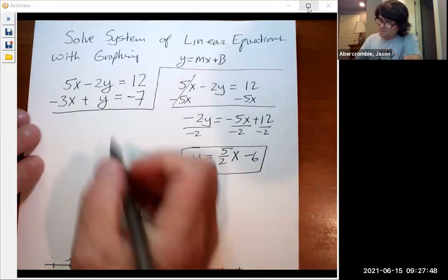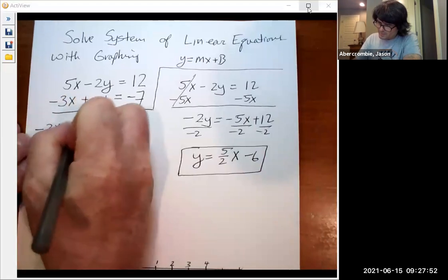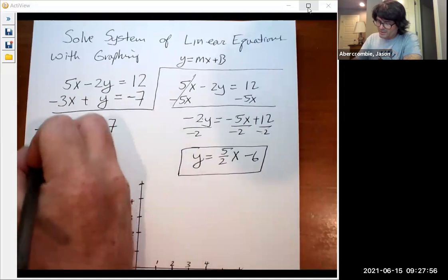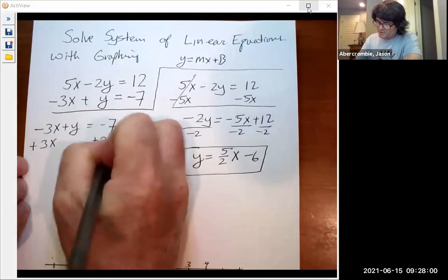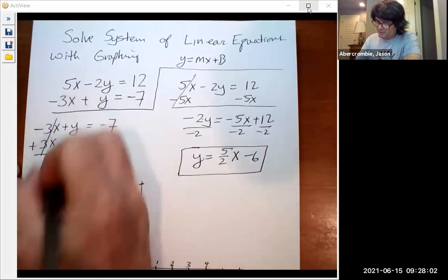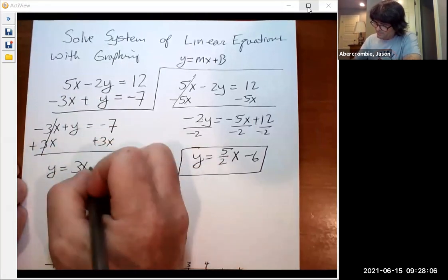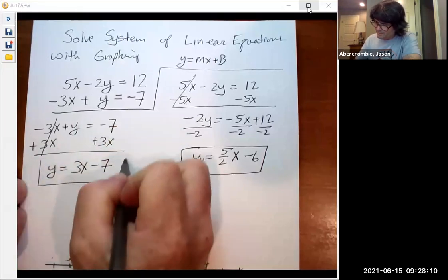And then over here, I'm going to take the other equation, -3x plus y equals -7. We're going to add 3x to both sides to get the y by itself. And this is actually a little easier because now y is already all by itself.